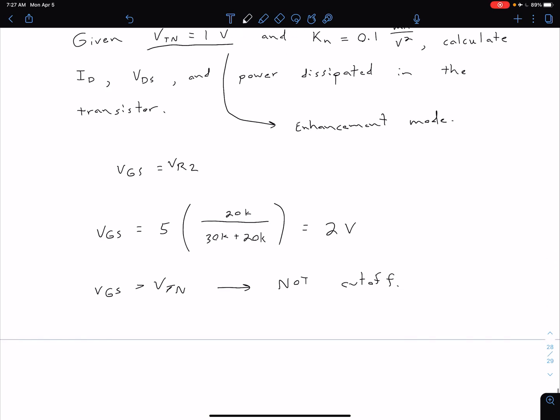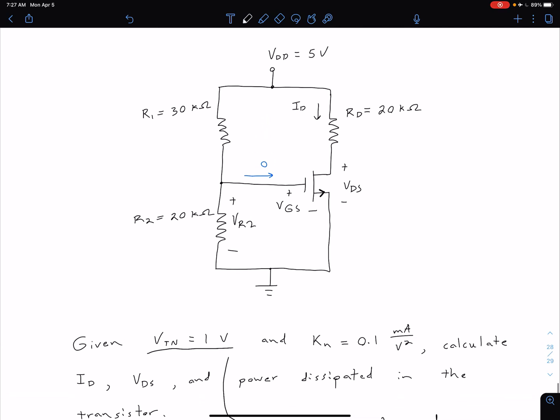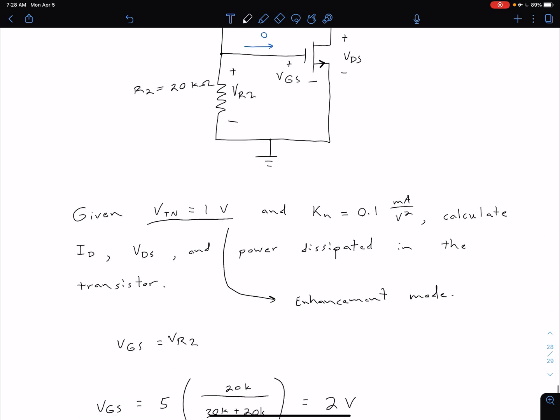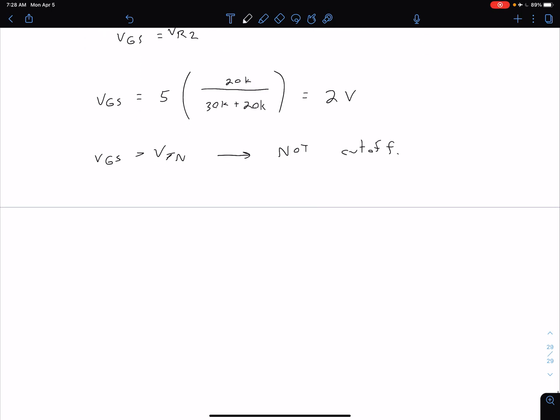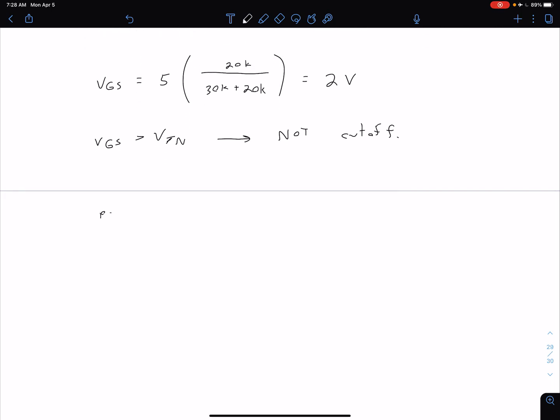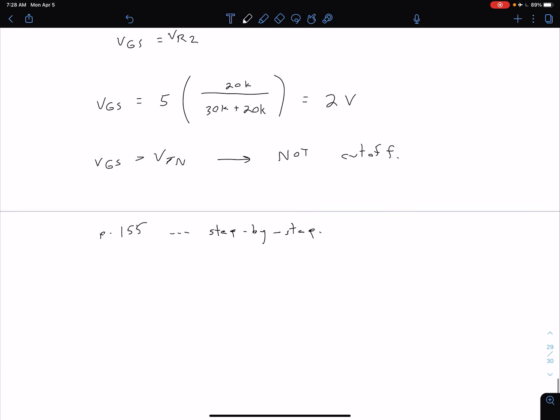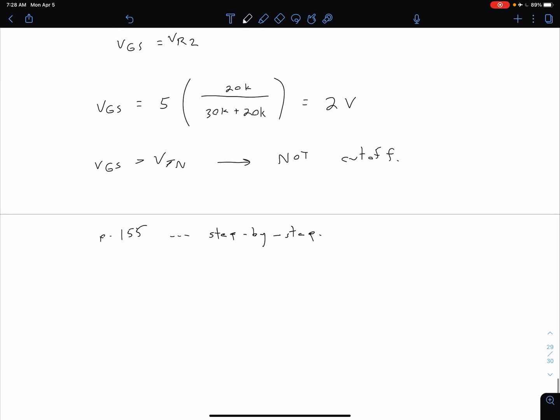So the next thing we want to do is assume an operating mode. So it's not immediately obvious whether this is going to be saturation or non-saturation. And so there are a set of rules or step-by-step process that we can do when going through this DC analysis. For details on that, you can look on page 155 in the textbook. This is our step-by-step process.